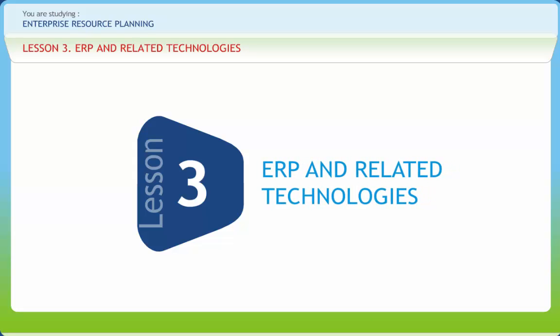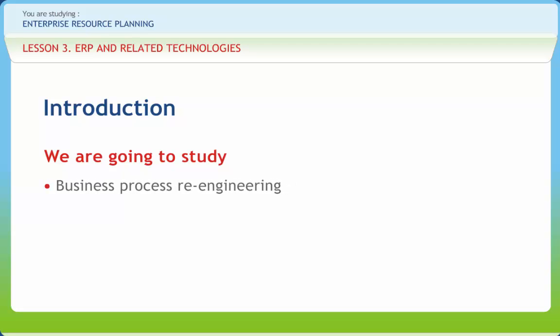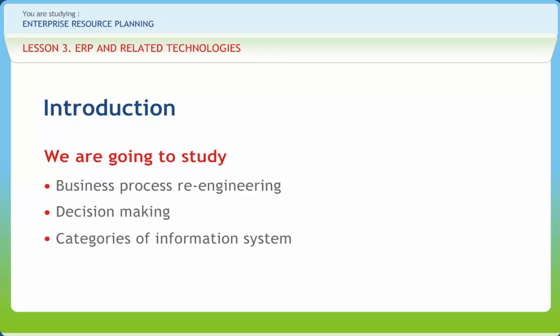ERP and related technologies. We all know the data in the ERP application is not integrated with other enterprise or division systems and does not include external intelligence. In this lesson, we will study business process re-engineering, decision making, categories of information systems, and online analytical processing.